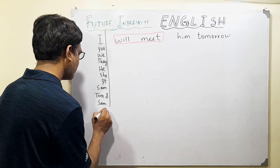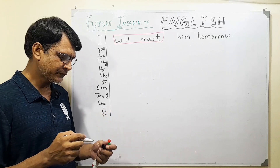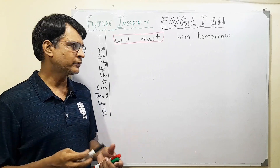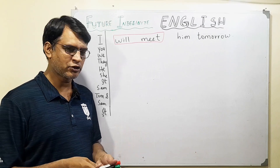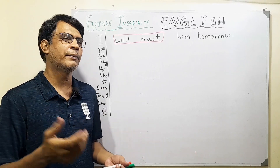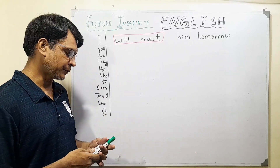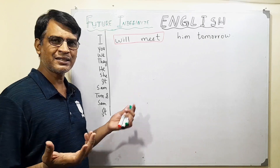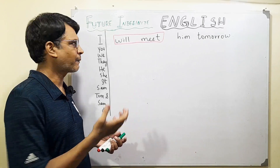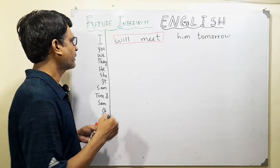And it will meet him tomorrow — if it's a robot, you know, robots are very sophisticated these days. So there is no harm in saying 'it will meet him tomorrow.' This is what we do in future indefinite — will with first form of verb.